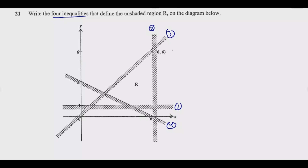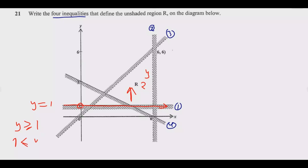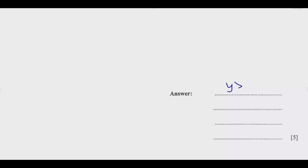For line one, the line passes through the point (0, 1). As you move along this line, regardless of the value of x, the value of y remains 1, so the equation is y = 1. We are interested in the points above this line. Because it's a solid line, points on the line are also part of the solution. So y is greater than 1, and including the equal sign: y ≥ 1. That is the first inequality.